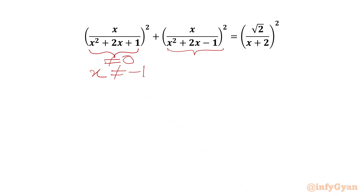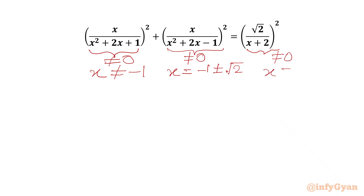x squared plus 2x minus 1 cannot be 0. Using the quadratic formula we get x cannot equal minus 1 plus or minus root 2. Also the denominator x plus 2 cannot be equal to 0, so x cannot equal minus 2.